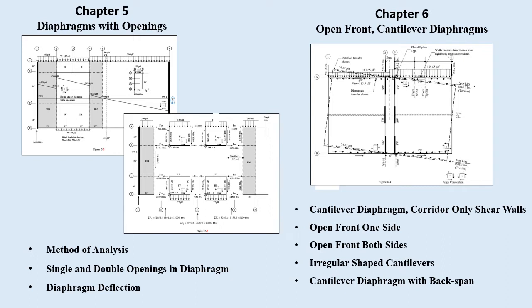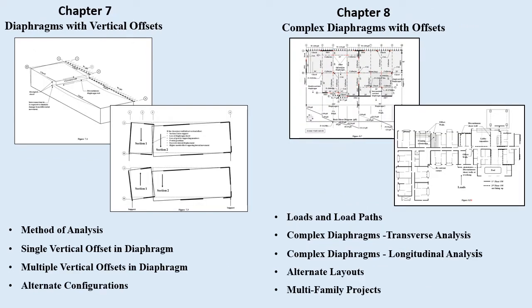Chapter six has been significantly revised to include state-of-the-art cantilever diaphragm open front design, and includes corridor shear walls only, an open front one or both sides, irregular-shaped cantilever diaphragms, and a cantilever diaphragm with a back span. Chapter seven has been significantly revised to provide a clearer understanding of how to design diaphragms with vertical offsets, including single and multiple vertical offset configurations and alternate configurations. Chapter eight now also addresses multi-family projects with horizontal offsets, and includes loads and load paths, complex diaphragms transverse and longitudinal analysis, alternate layouts, and multi-family projects.